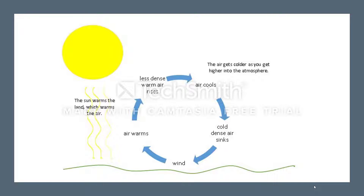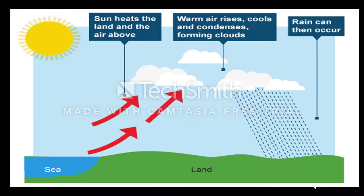Convectional rain occurs when the sun's energy heats up the land surface and its surrounding air. Warm air rises, forming convection currents. There is transfer of heat energy, and naturally warm air rises higher in the sky — that's how condensation takes place and clouds are formed. Once the clouds are formed, subsequently rainfall takes place. It all starts with the rising of warm air.